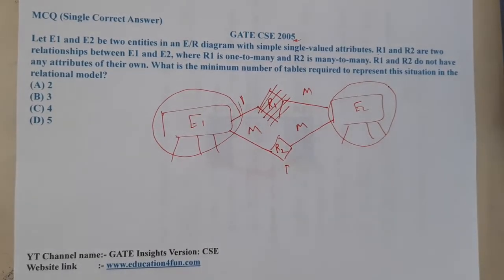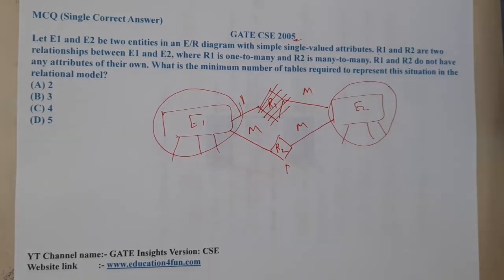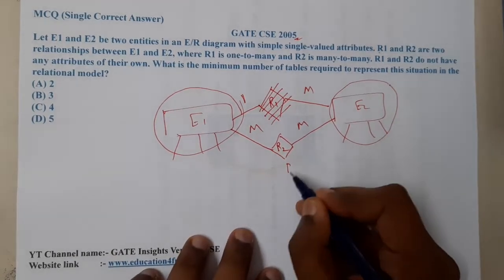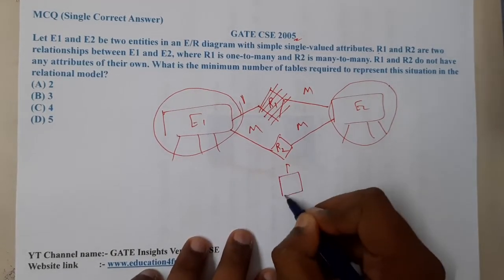when it comes to R2, it is a many-to-many relation. So you cannot write it directly on many side anywhere. That is the reason why here you need a separate table by